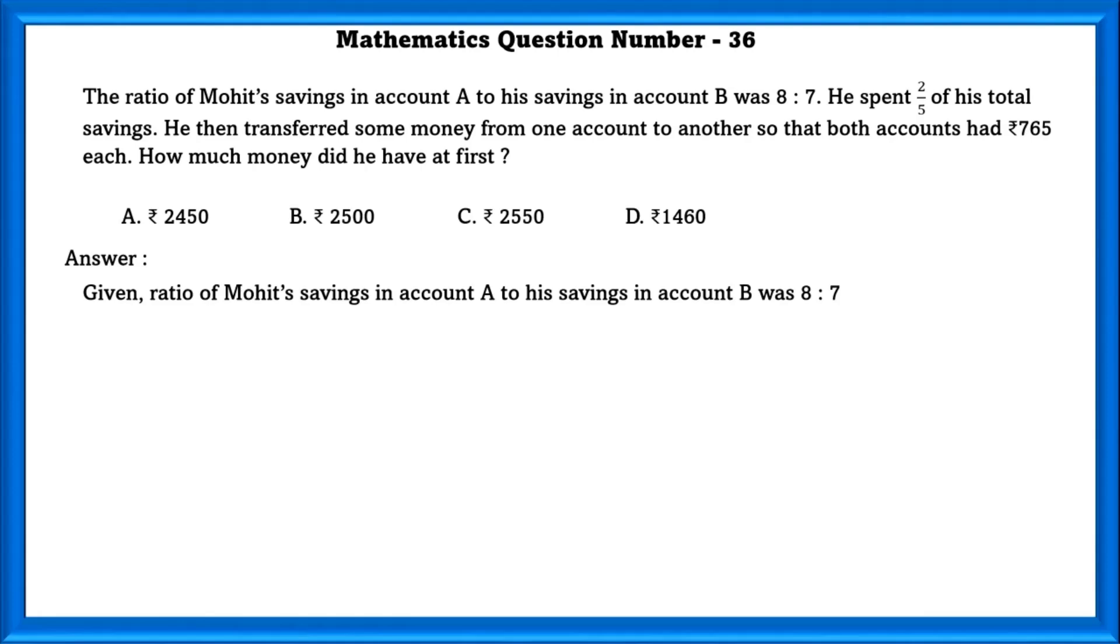Given ratio of Mohit's savings in account A to his account savings in B is equal to 8 is to 7. Since we don't know the actual amount, we can take the common factor of the ratios as X. So 8X plus 7X is equal to 15X. That is the total savings for now.